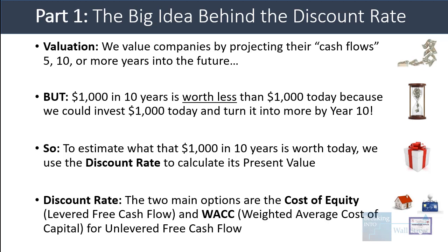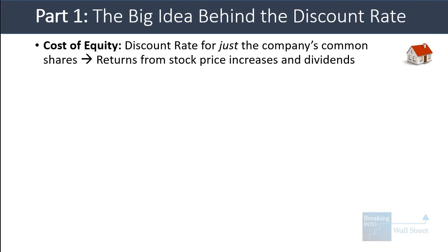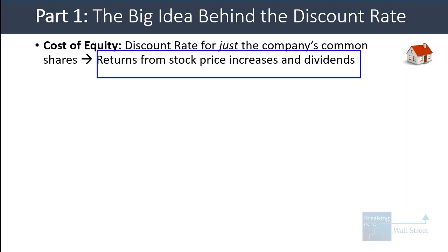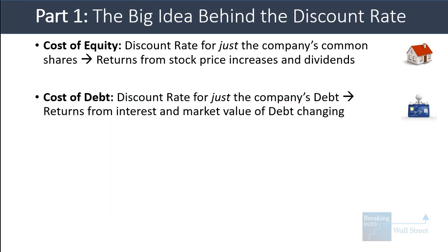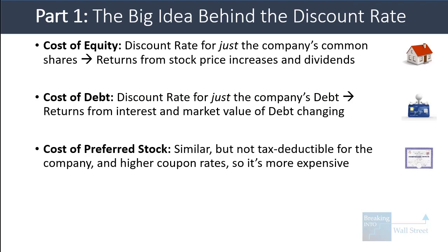The two main options for the discount rate in a DCF are the cost of equity, which pairs with levered free cash flow, and WACC, the weighted average cost of capital, which pairs with unlevered free cash flow. With cost of equity, you are looking at the discount rate for just the company's common shares — potential returns from the stock price going up and from dividends. With the cost of debt, you're looking at returns from interest paid and the market value of debt changing. Cost of preferred stock is very similar, but preferred dividends are not tax deductible, and coupon rates tend to be higher.